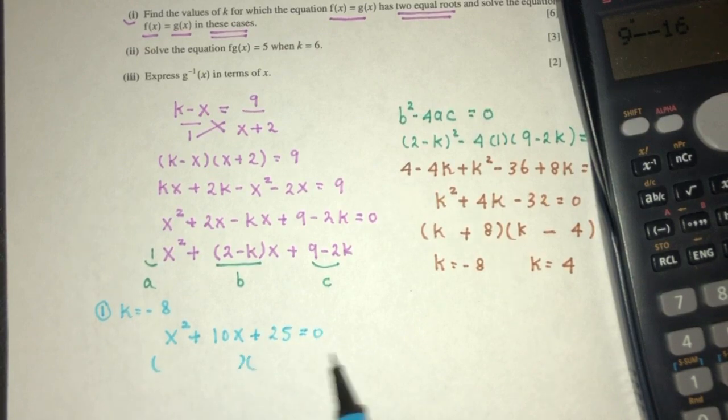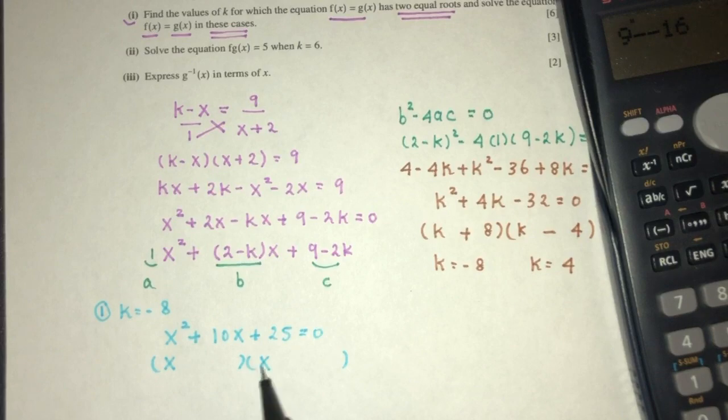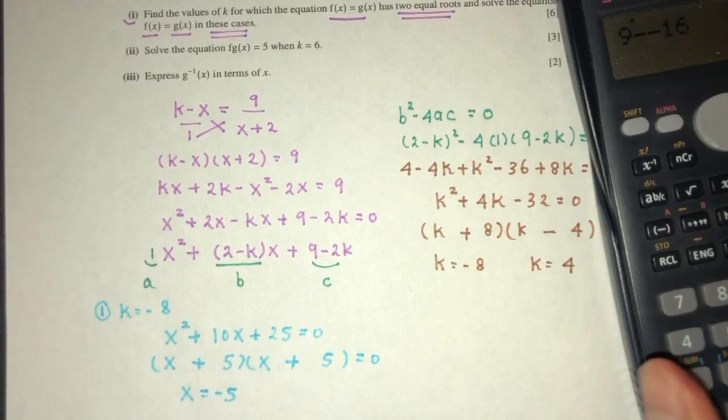So factorize, let's see what do we get. We get x times x, 5 times 5. So we get plus 10, that should be plus and plus. x can be -5. That is one value.